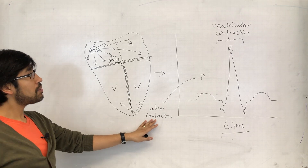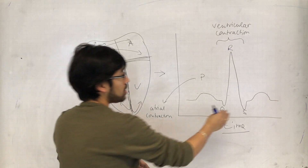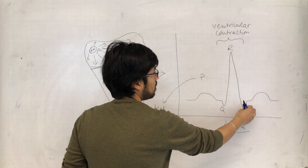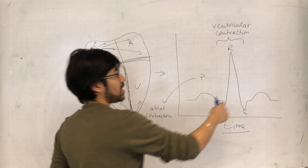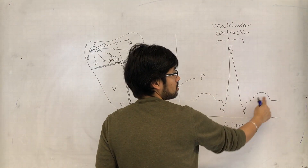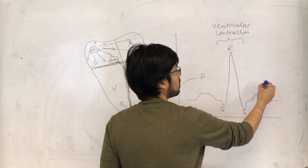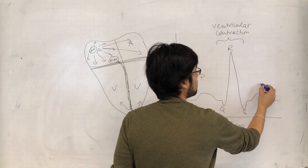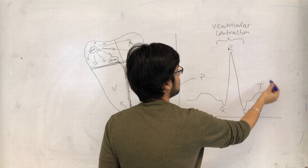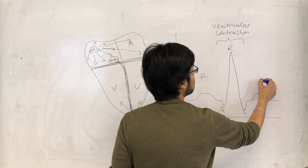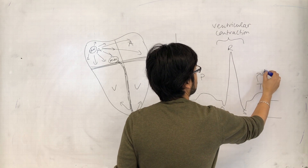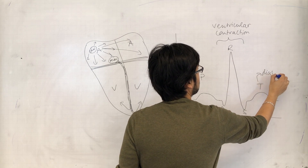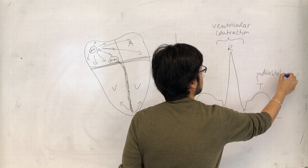The T wave comes after the QRS complex and is associated with diastole.